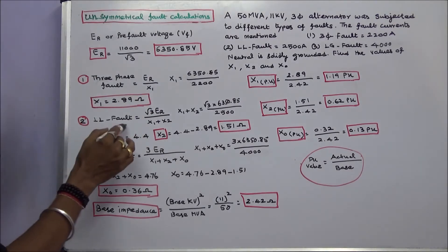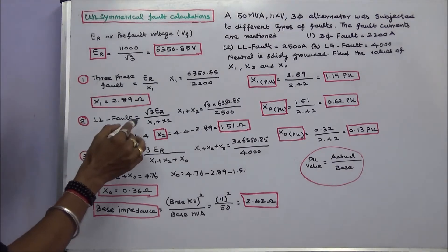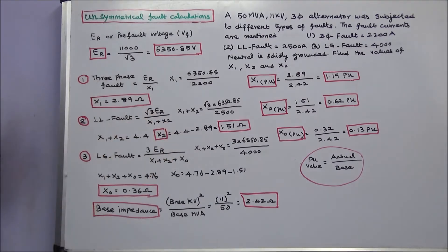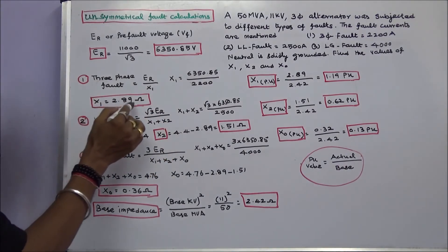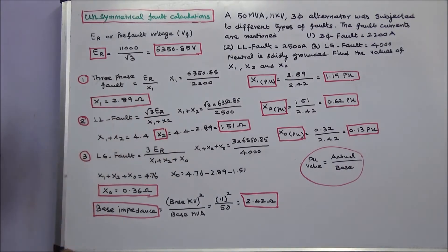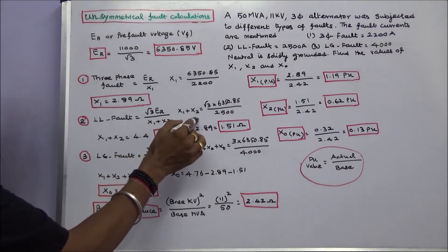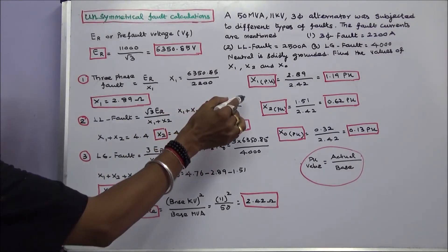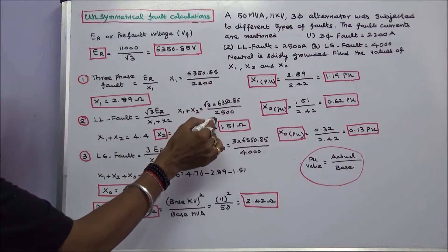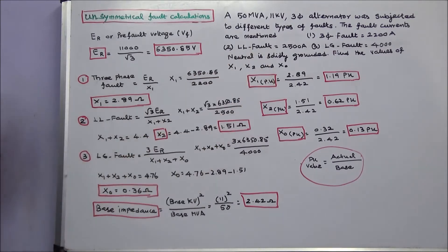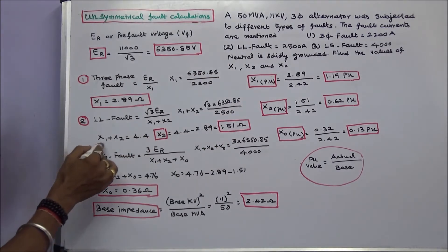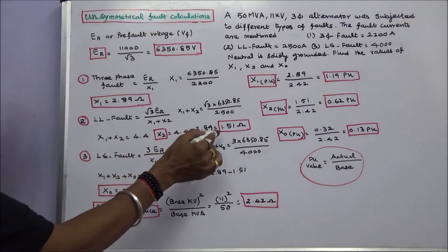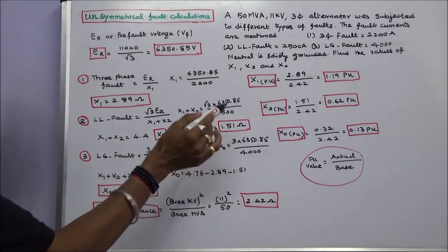For a line-to-line fault, the formula is root 3 multiplied by ER divided by (X1 plus X2). We know X1 is equal to 2.89 ohms. Therefore X1 plus X2 equals root 3 into 6350.85 divided by 2500, giving X1 plus X2 equal to 4.4 ohms. So X2 is equal to 1.51 ohms.